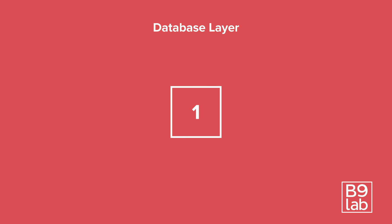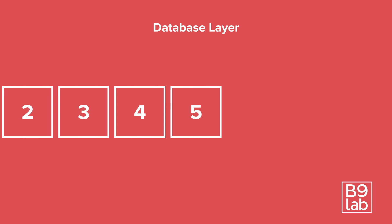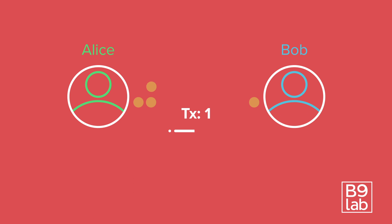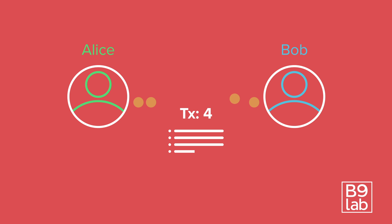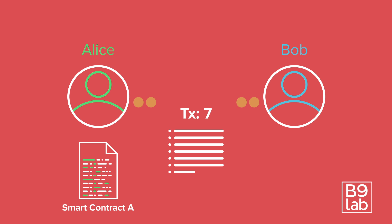Blockchain databases are append only, that means that once data is added, it cannot be deleted or changed anymore. Data is encoded in transactions. This can be information about transferring cryptocurrency, or it can contain either new smart contract code or a call of a smart contract function.